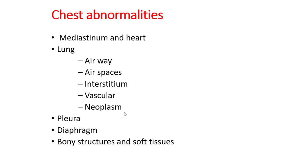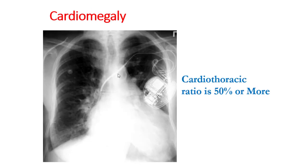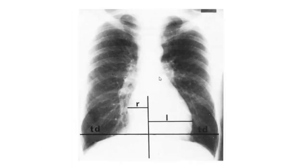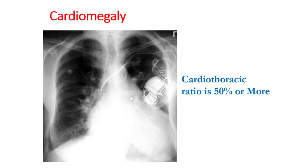Starting with cardiomegaly: if the cardiac diameter is 50 percent or more of the cardiothoracic diameter, that is called cardiomegaly. This most commonly occurs in systemic hypertension, valvular disease, or cardiomyopathy.